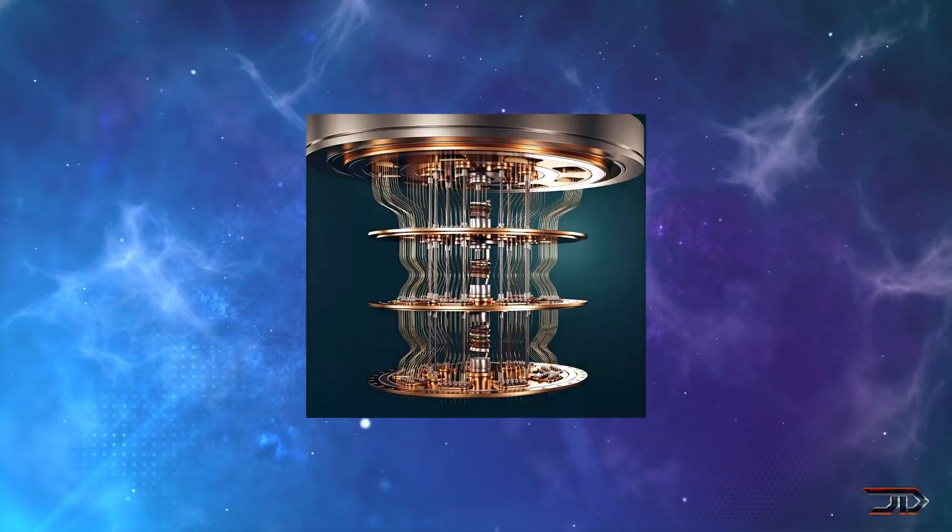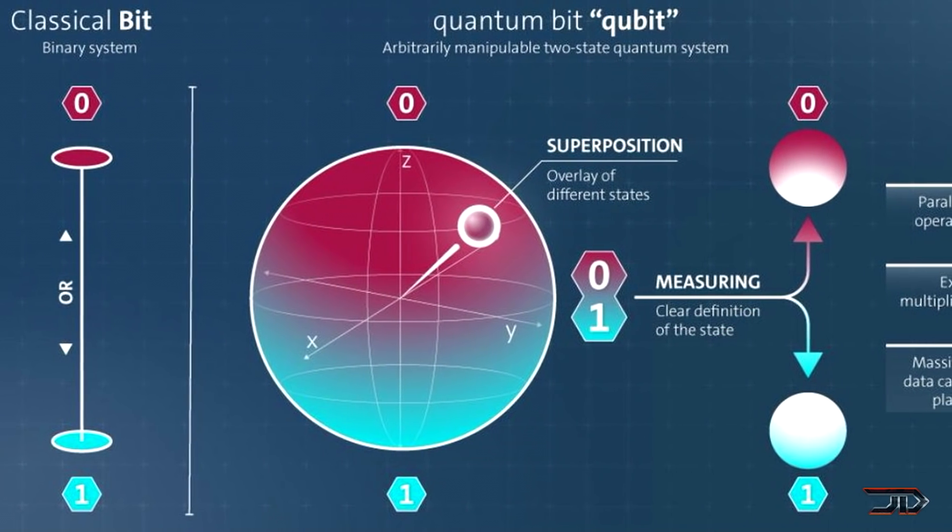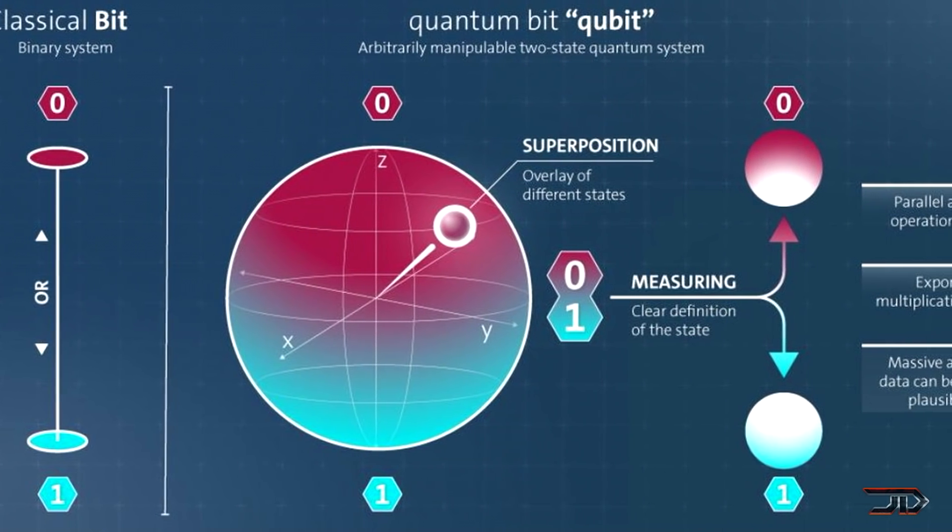A traditional computer uses bits, which either encode as 0 or 1, whereas a quantum computer uses qubits, which can be in the superposition of 0 or 1 at the same time until observed. This would theoretically allow a quantum computer to process a vast number of calculations simultaneously.